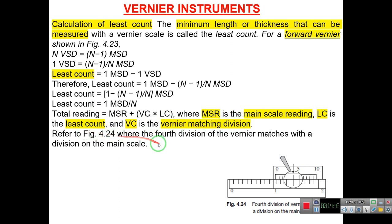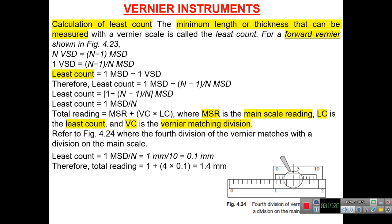Referring to the figure, the fourth division of the vernier matches with a division of the main scale. The least count equals one main scale division divided by n = 1 mm ÷ 10 = 0.1 mm. Therefore, total reading = 1 + 4 × 0.1 = 1.4 mm.